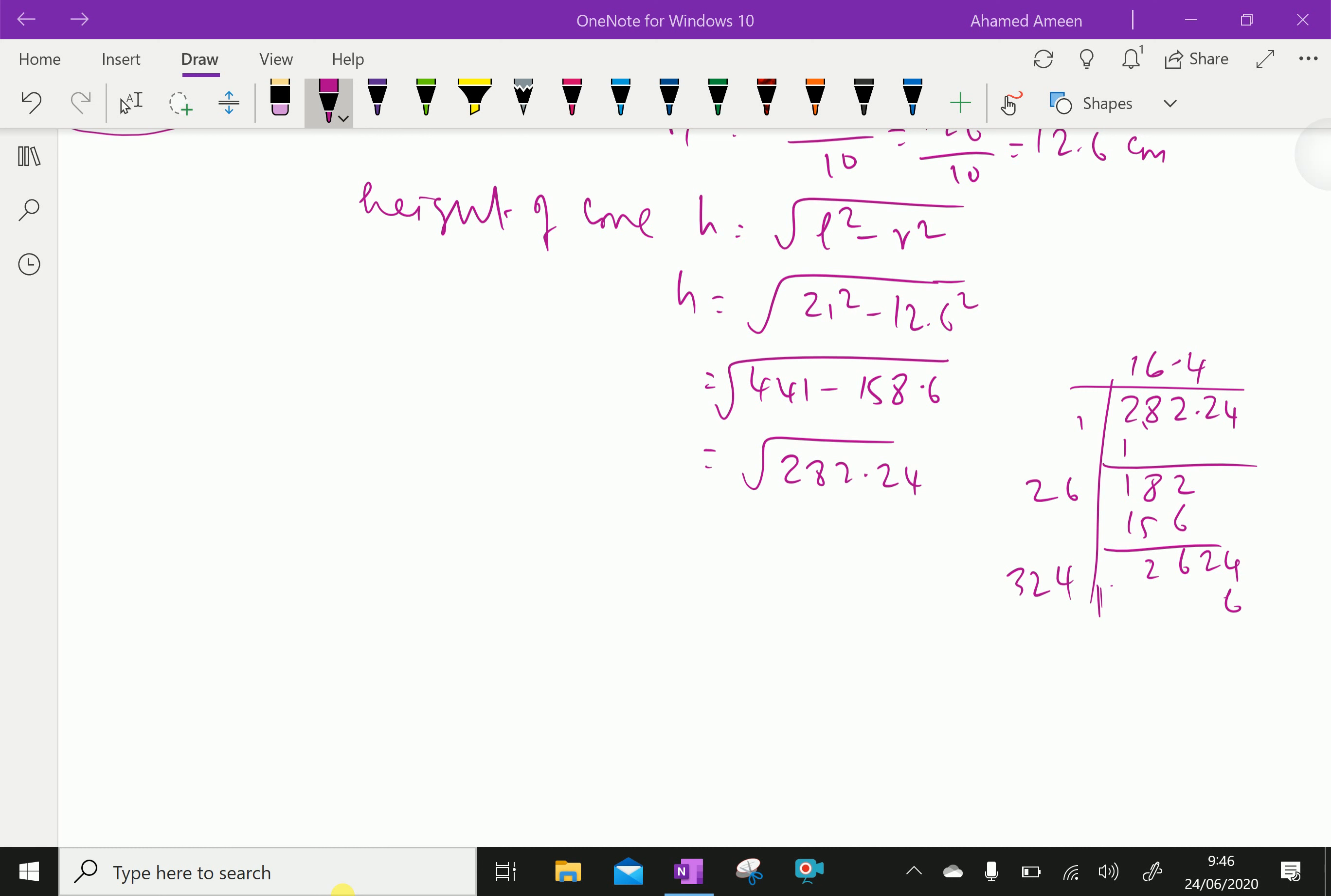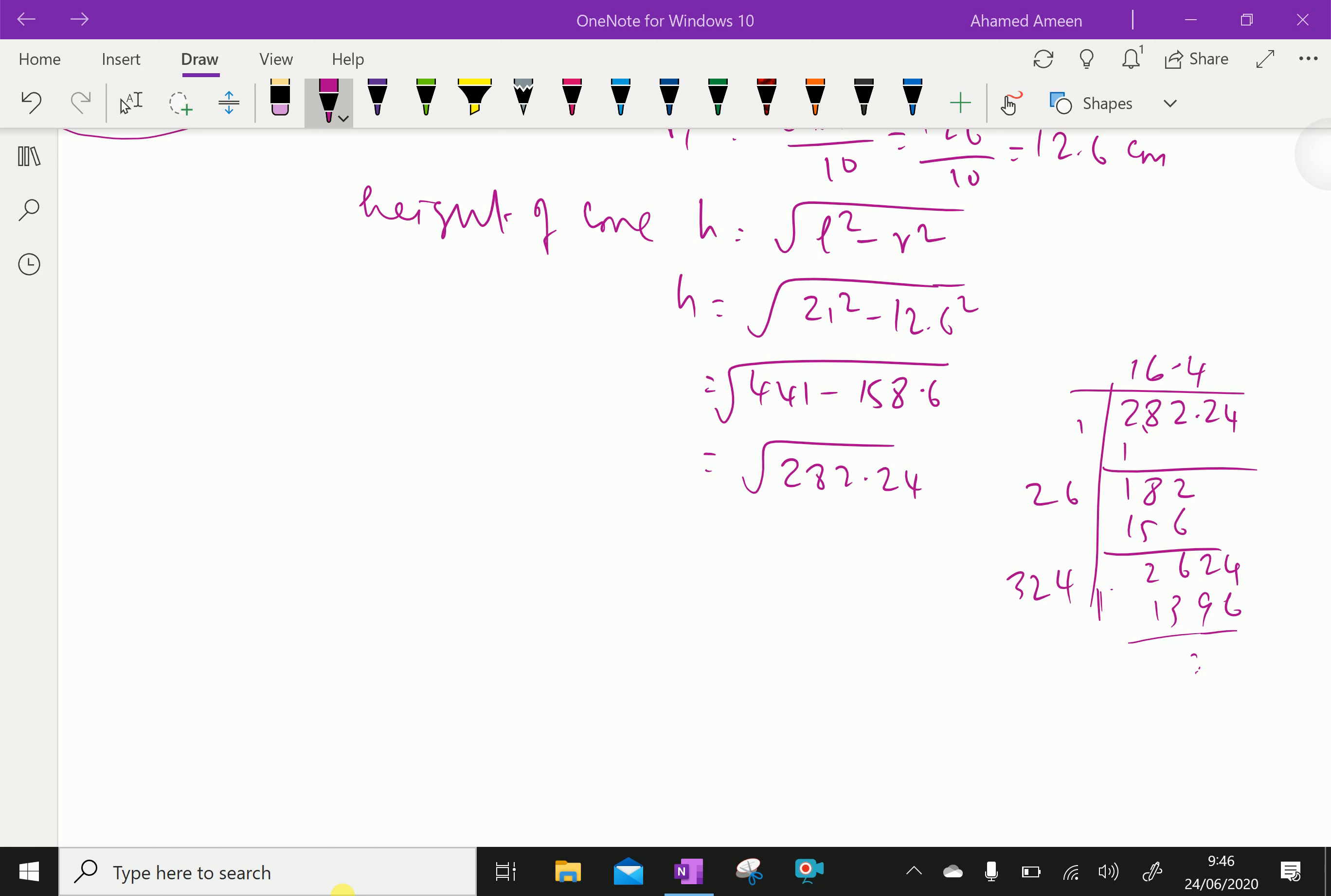Then, 4 times 4 are 16. 4 times 4 are 16, 1 carries. 4 times 2, 8, 9 and 12, 13. Since it goes, so we have approximately, we can put it 8 also, because 8 it goes. 8 eights are 64, 6 carries, 8 twos are 16, 16 and 22, 2 carries, 8 threes are 24, 26, exactly it goes. So 16.8, so this square root of 282.24 is 16.8 centimeter, we got the height.